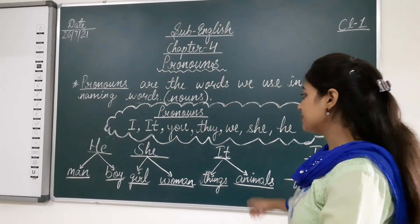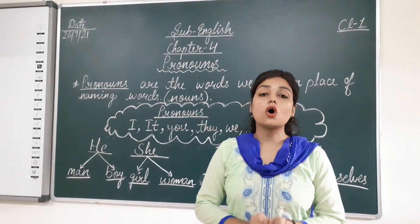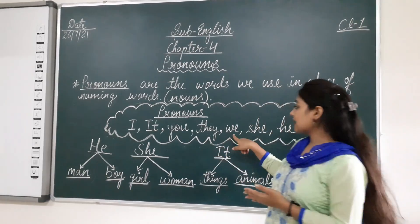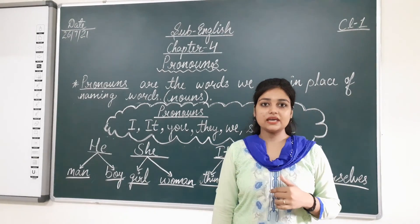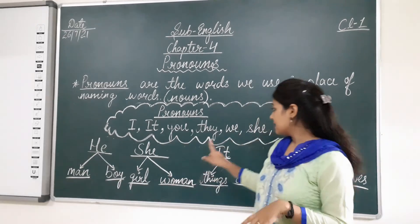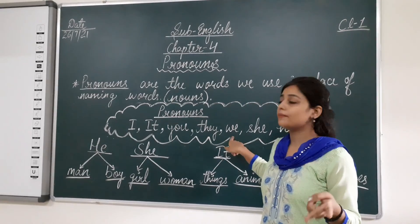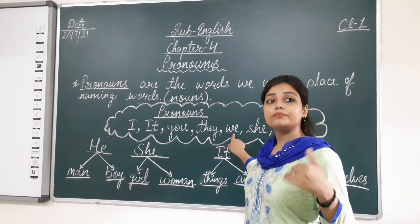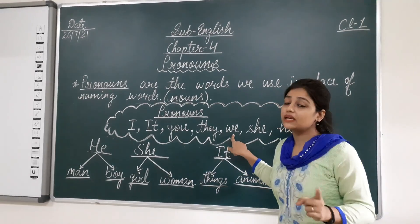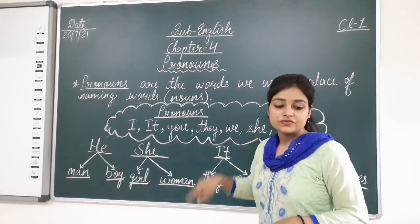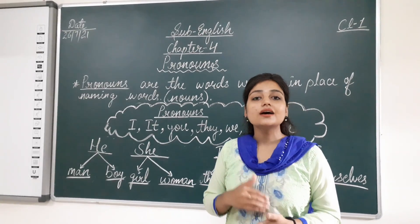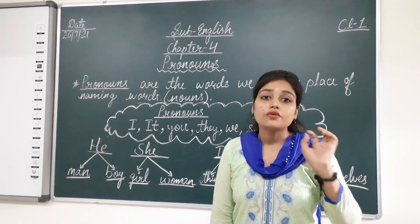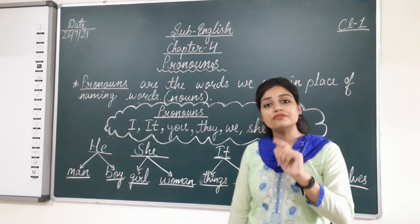Next is 'we'. We refers to a group of two or more people which includes the speaker. For example, I am happy and Rika is happy — since I, the speaker, am included, we say 'we are happy'. So 'we' is used when the speaker is also part of the group.